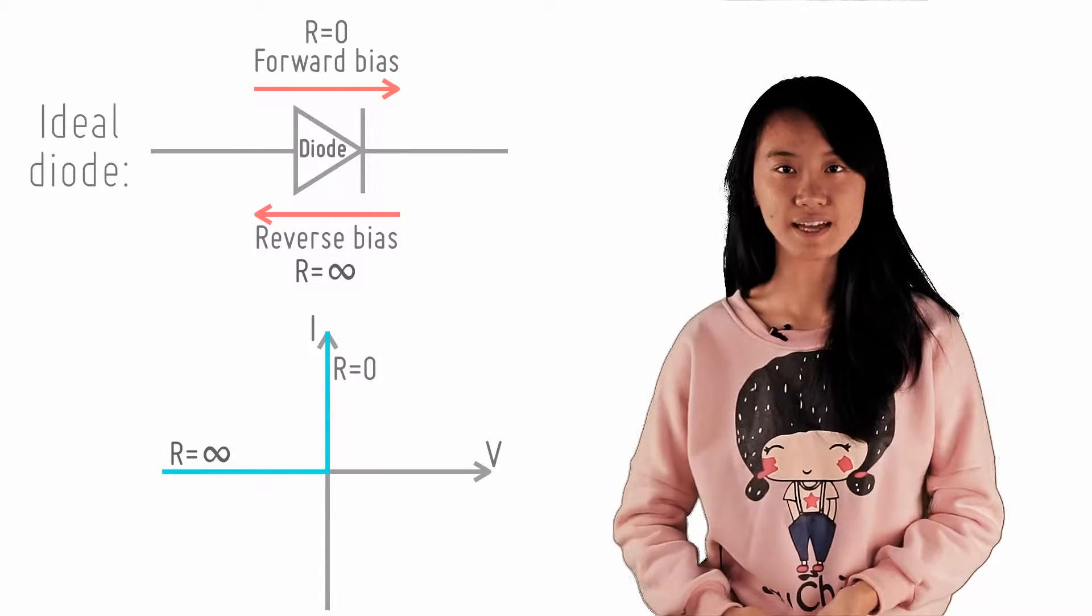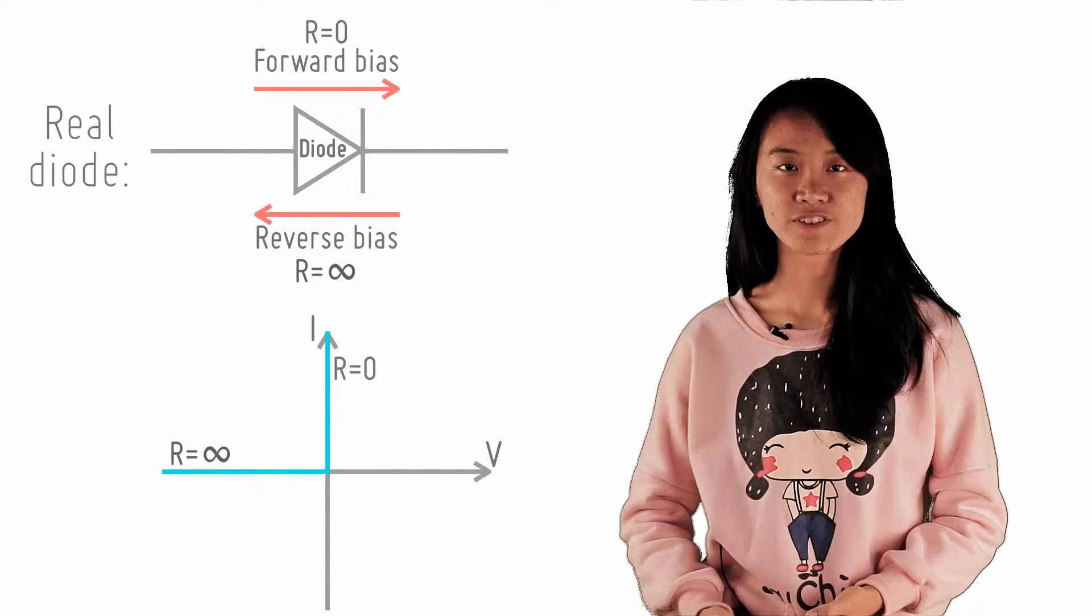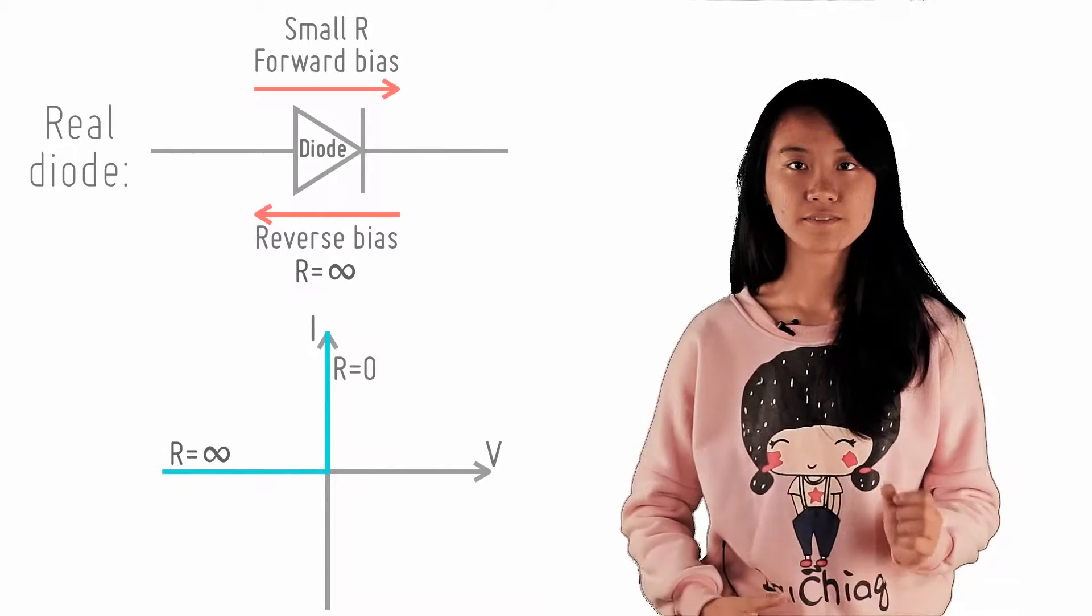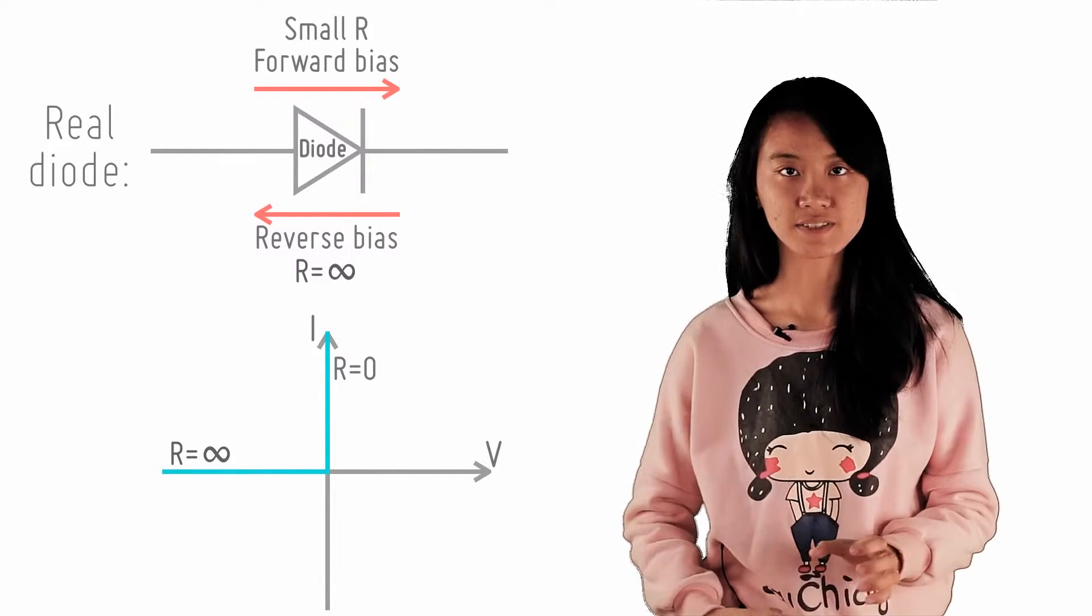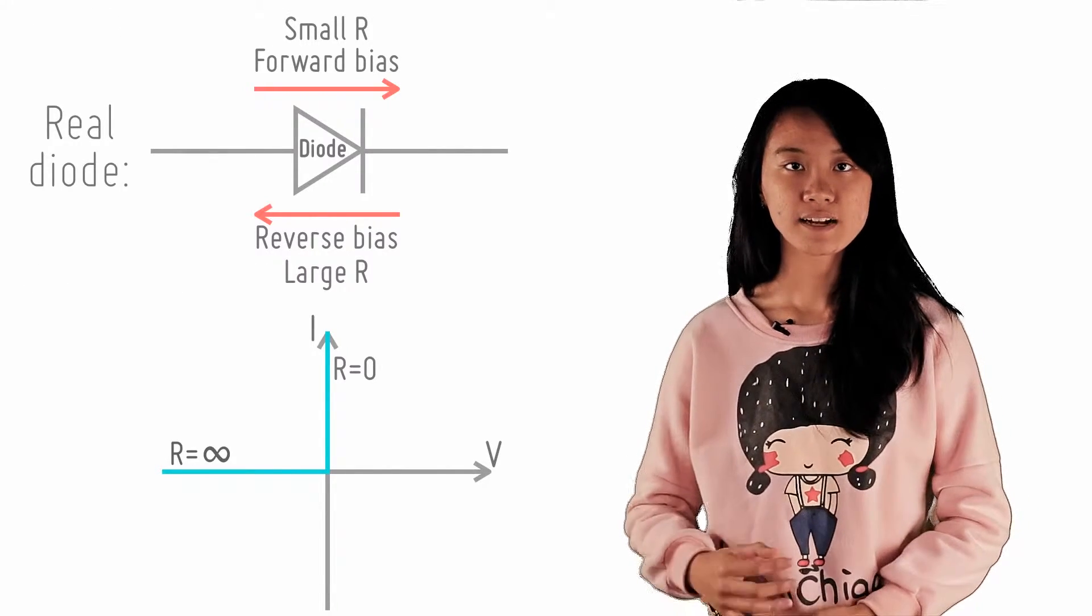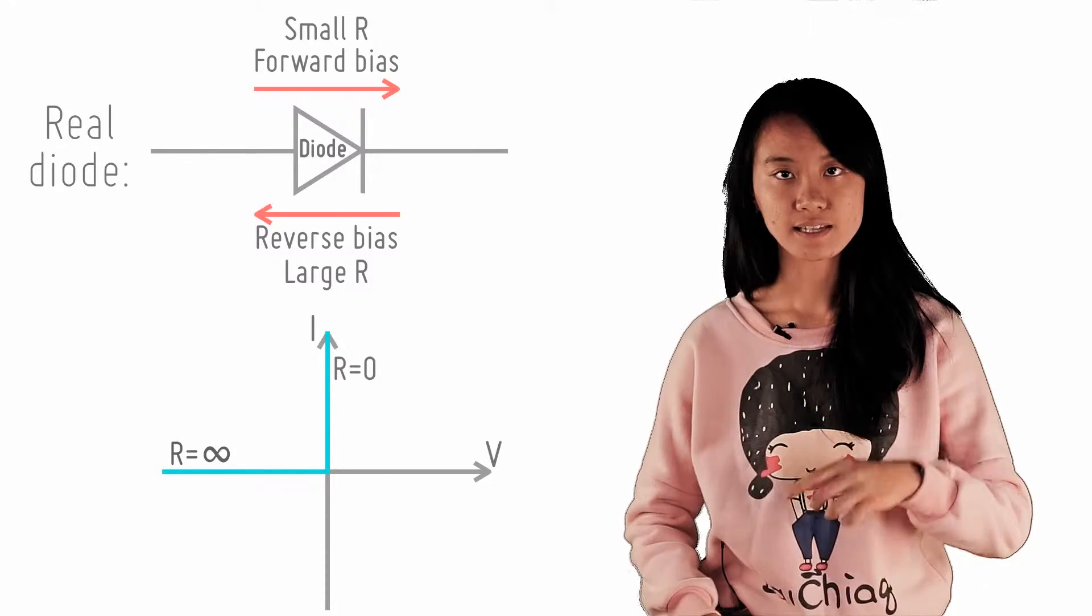However, in a real diode, the forward bias has extremely small resistance, while the reverse bias has extremely large resistance. Hence, the current does not go to infinity in the forward bias.